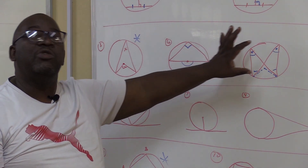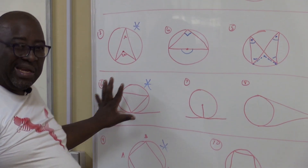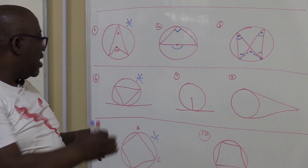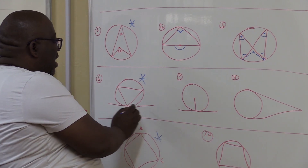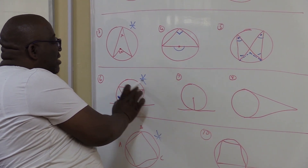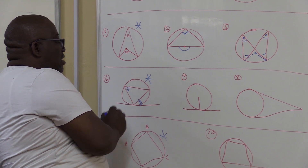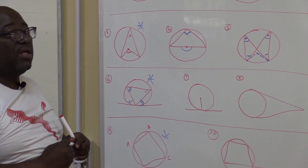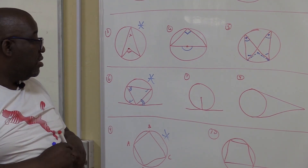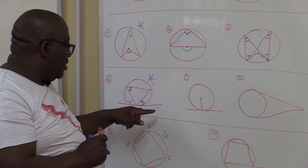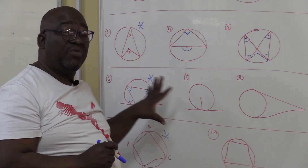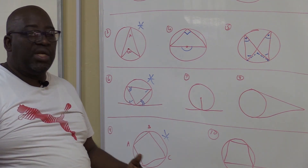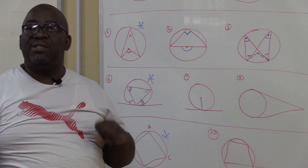Now let us look at the next three theorems, which have something to do with a tangent. This is the tan-chord theorem: an angle between a tangent and a chord is equal to the angle subtended by that chord in the alternate segment. So this angle will equal that angle if coming from that side. The proof of the tan-chord theorem is required. All three of these theorems have to do with a tangent, so when you read a statement saying a line is a tangent, the solution is likely from one of the three tangent theorems.